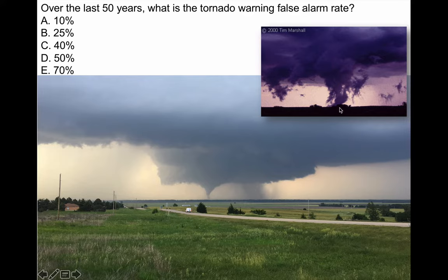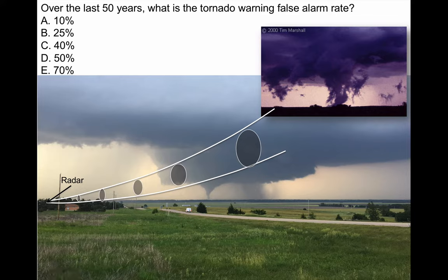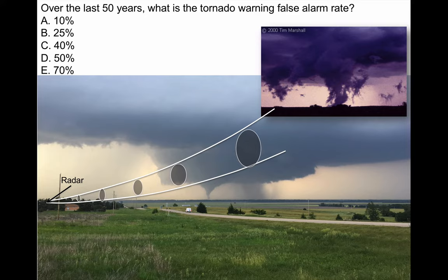A lot of people see SCUD and call it in to authorities, which misrepresents the data. The other reason for the 70% false alarm rate is that tornadoes are underneath the thunderstorm, close to the ground. The radar beam travels out and up, so it may scan over the top of the tornado and only detect mid-level rotation, not the tornado itself. National Weather Service radar meteorologists will warn any time they see rotation, because about 30% of rotating storms produce tornadoes — they play the better-safe-than-sorry card. In an ideal world we'd have a denser radar network, but the beam often goes right over the tornado.